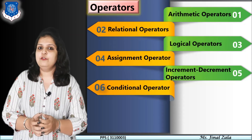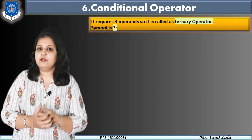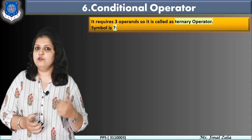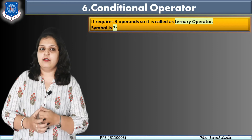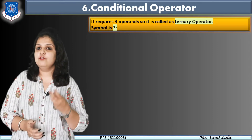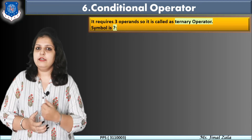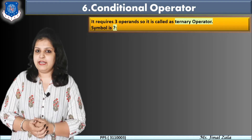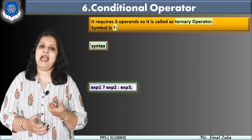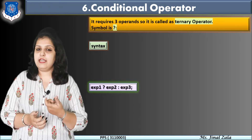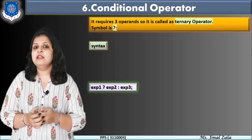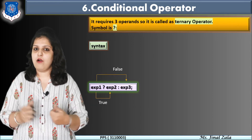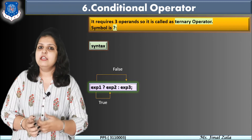The next operator is the conditional operator. When we write a program using a conditional statement, the same program can be written using the conditional operator for code optimization. This operator is also called the ternary operator because it uses three operands. Its symbol is a question mark followed by a colon. The syntax is: expression1 ? expression2 : expression3 — where expression1 is the condition, expression2 is the true part, and expression3 is the false part.